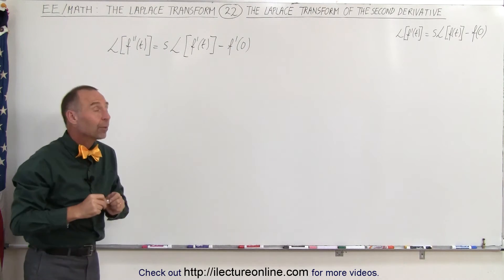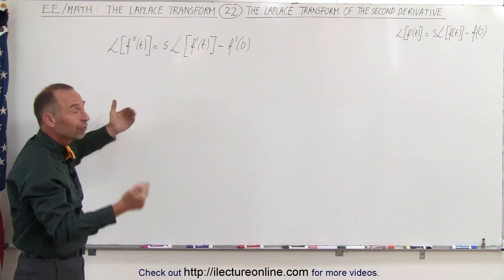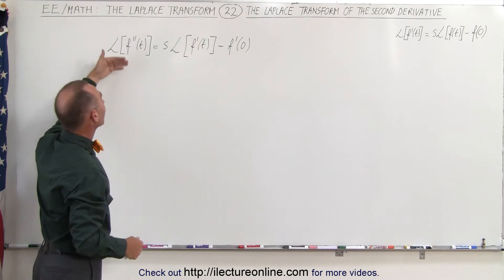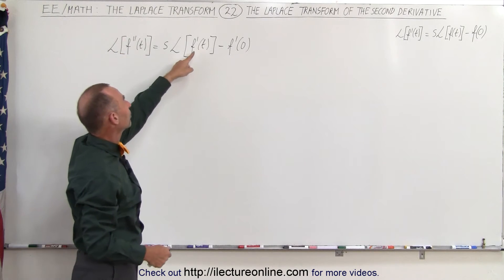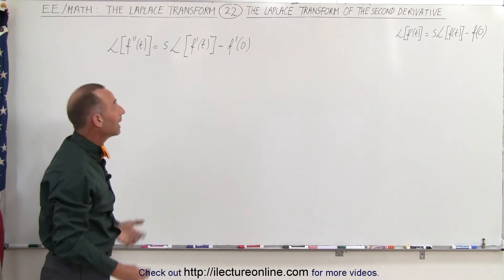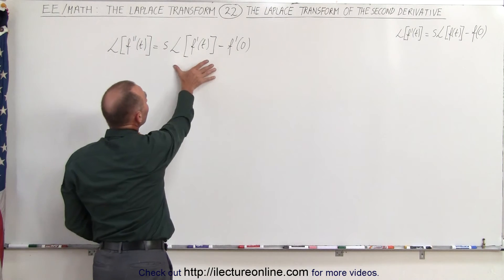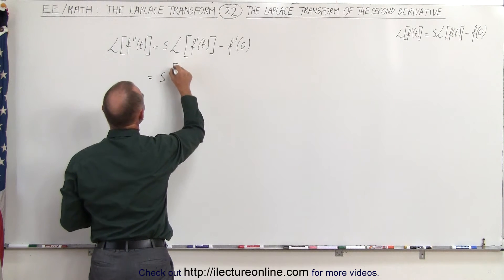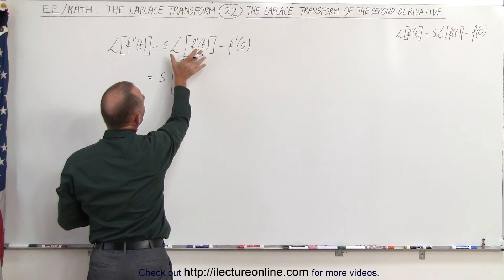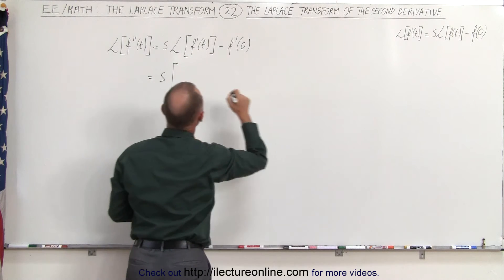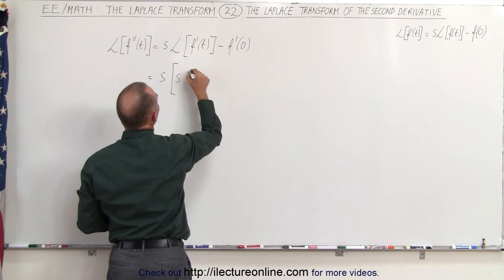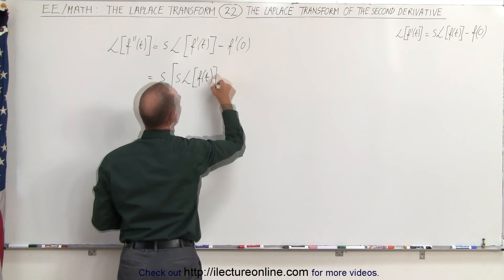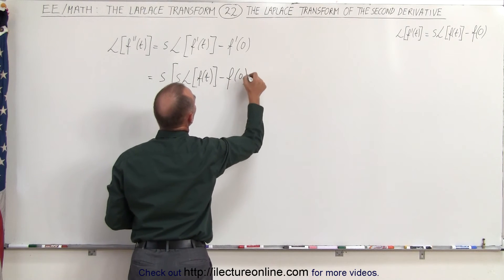Because we can say: imagine the second derivative is actually the first derivative — then it becomes f minus the function value at zero. But if you make it the second derivative, this becomes the first derivative, and that also becomes the first derivative. We then realize this can be written as s times the Laplace transform of the first derivative, which is s times the Laplace transform of f(t) minus the function evaluated at zero.